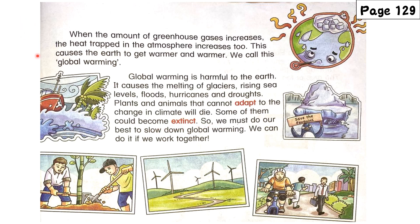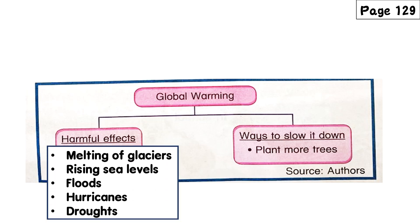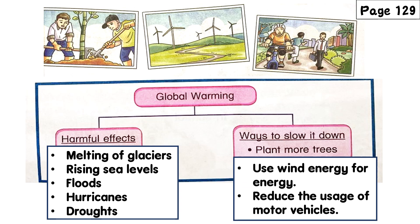This is the tree map about global warming. The harmful effects are: melting of glaciers, rising sea levels, floods, hurricanes, and droughts. Ways to slow it down: plant more trees, use wind energy, and reduce the usage of motor vehicles.